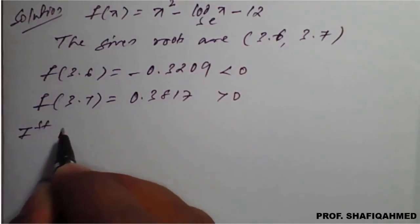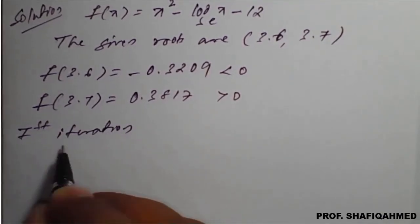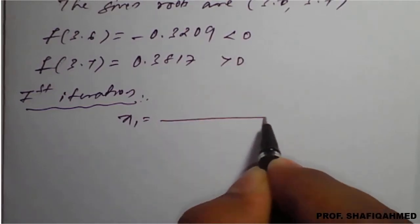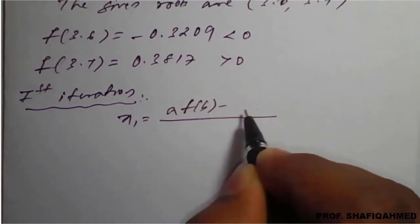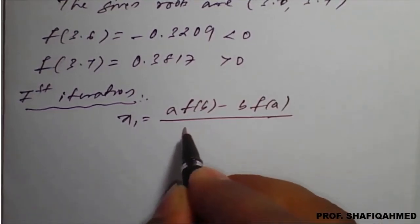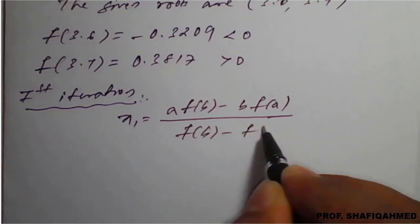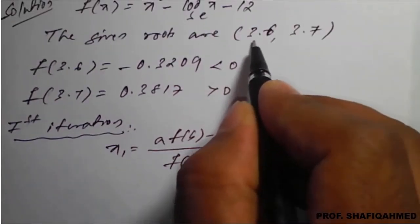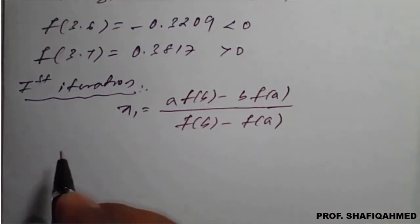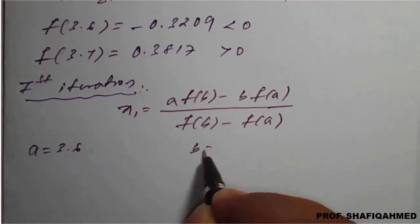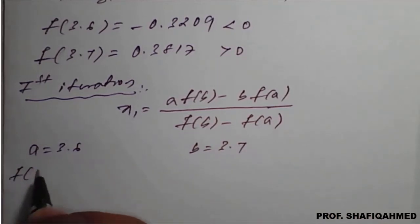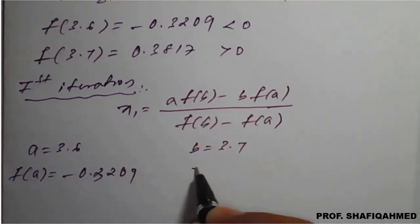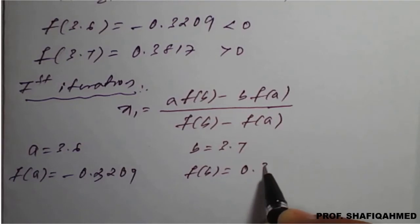Therefore, first iteration. The Regula Falsi formula is: x1 = [a·f(b) - b·f(a)] / [f(b) - f(a)]. From the question, a = 3.6, b = 3.7, f(a) = f(3.6) = -0.3209, and f(b) = f(3.7) = 0.3817.